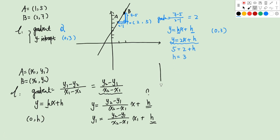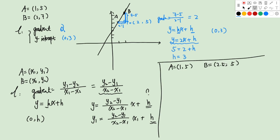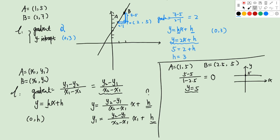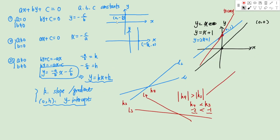Let's try a different example. If A = (1, 5) and B = (2.5, 5), using the formula we get (5 minus 5) over (1 minus 2.5) = 0. A gradient of 0 means the line is not steep at all — it will be parallel to the X axis. The equation of this line is Y equals to 5, which is exactly the first situation we showed earlier.